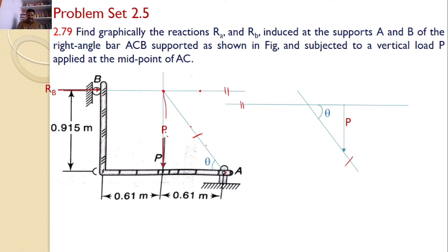This forms another right angle triangle. These two lines are parallel, so this angle is also equal to theta. By considering this right angle triangle, I can find the value of theta. Tan theta equals the opposite side, 0.915, by adjacent side, 0.61. Hence, I can find the value 56.31 degrees.